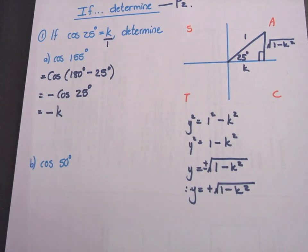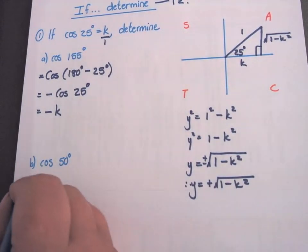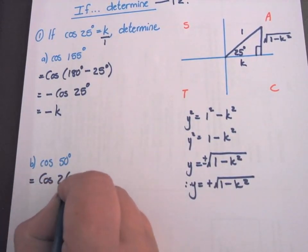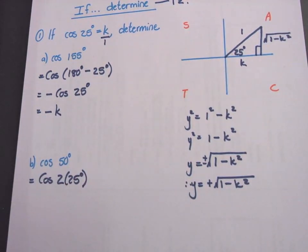Number B. Cos 50 degrees. Double angle. So this will be cos 2 times 25 degrees.